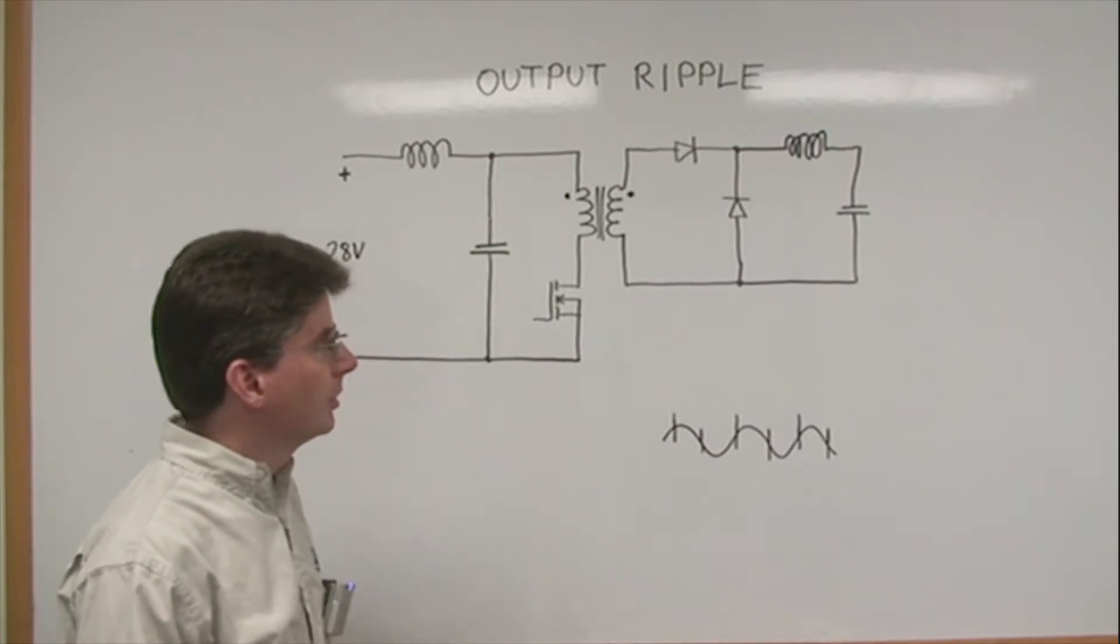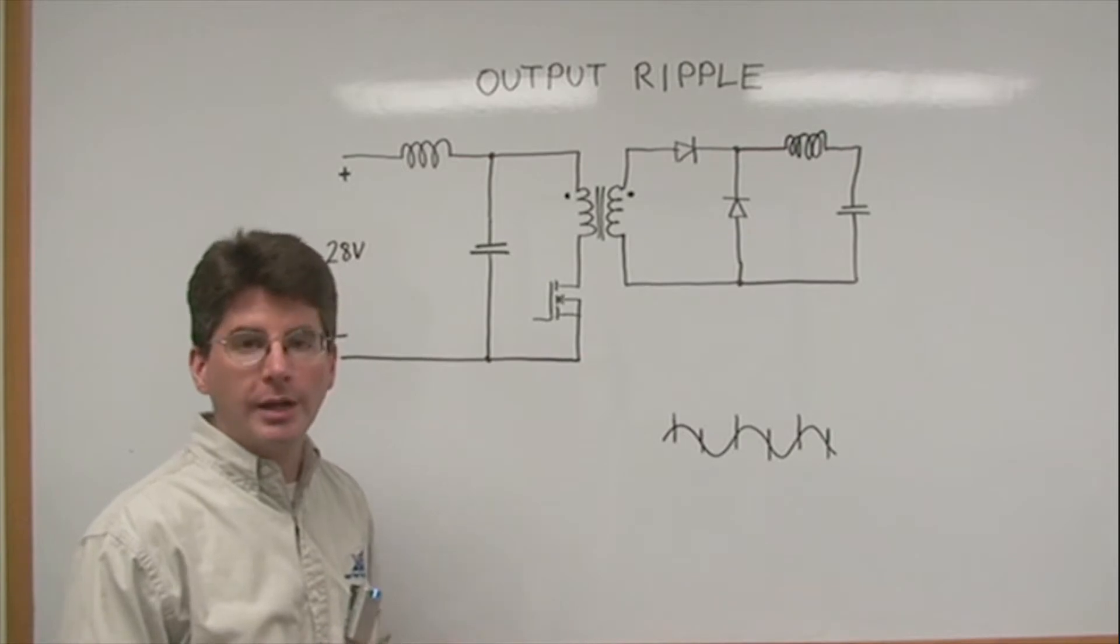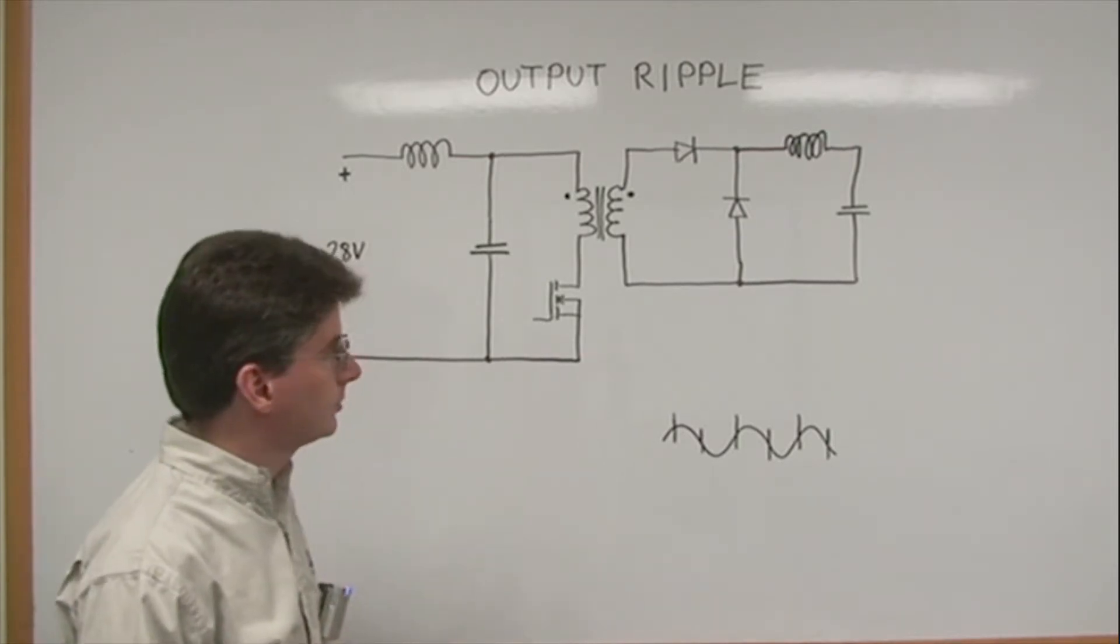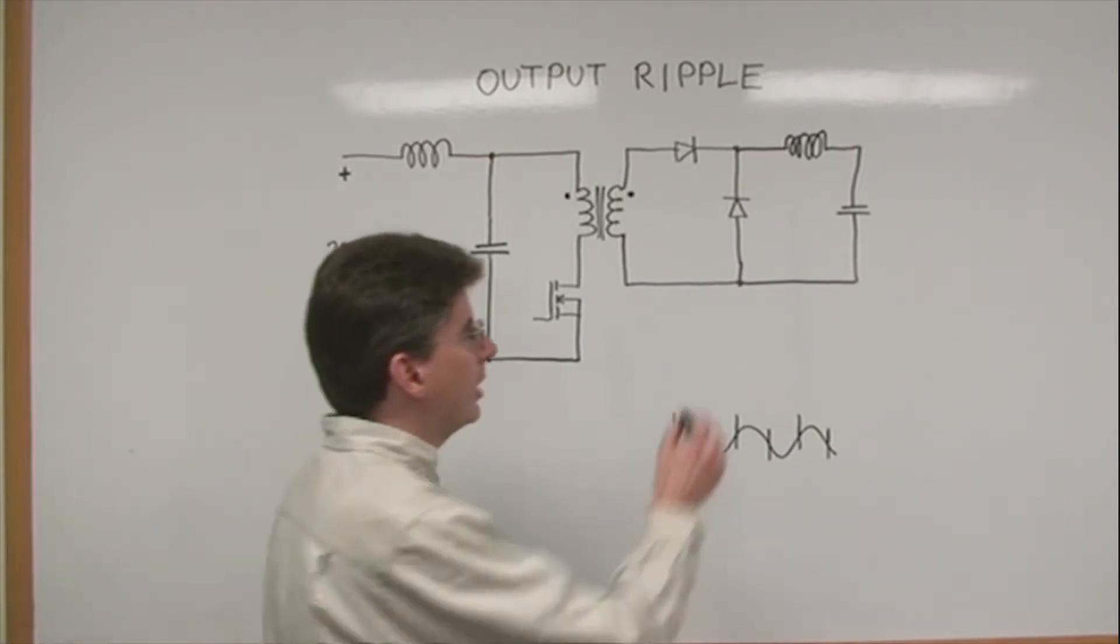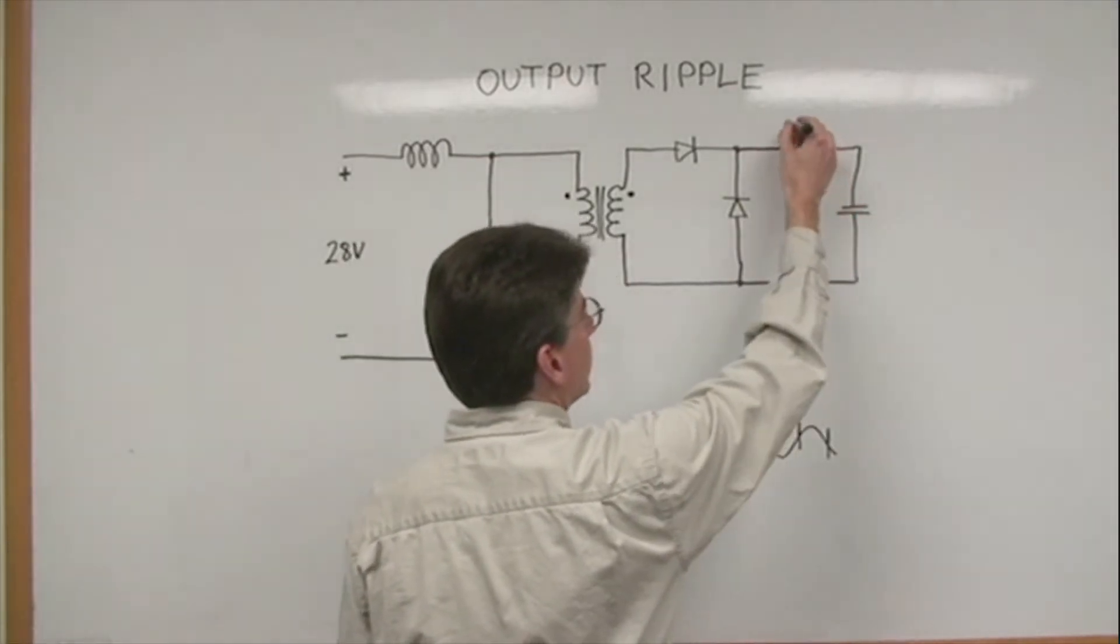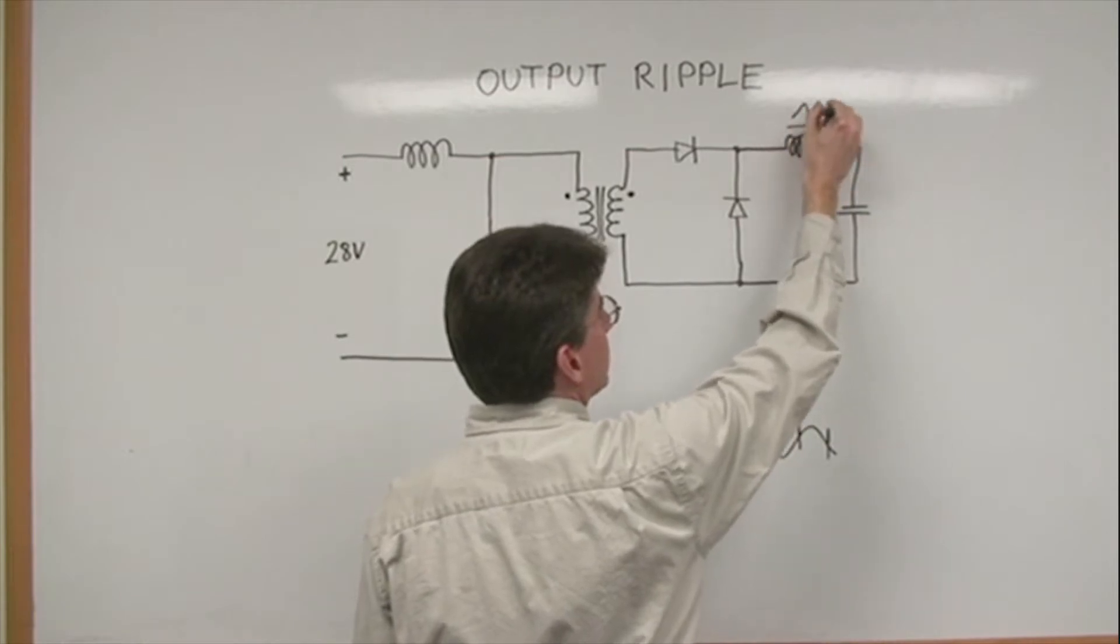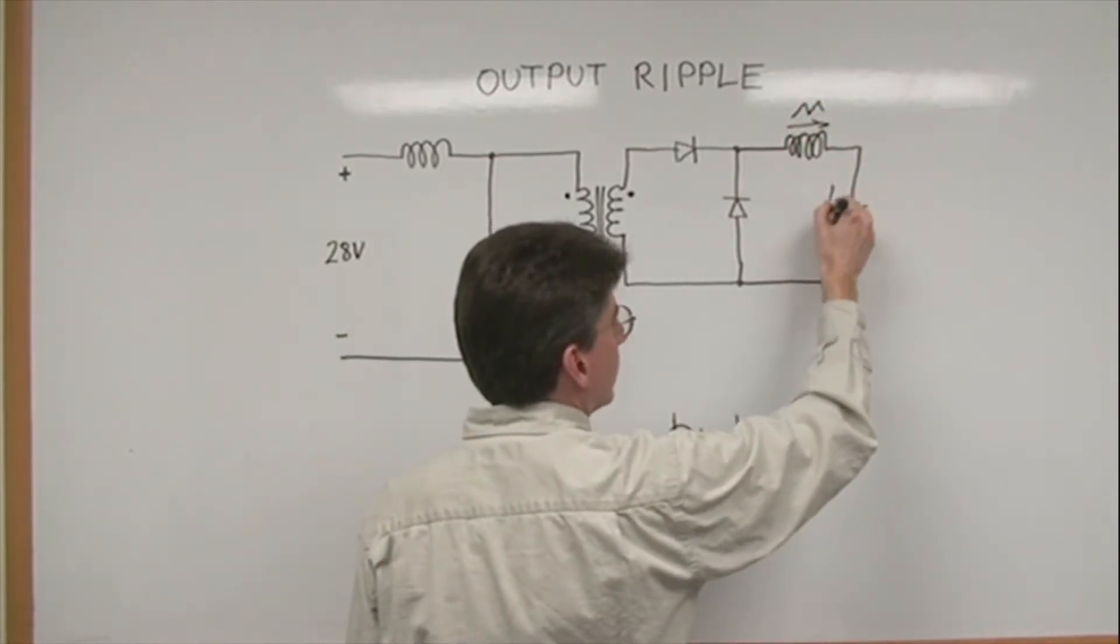We also use flyback in a lot of our converters. This topology will create output ripple in its output capacitor. The current in this inductor is a triangle wave current, and that current will flow in this capacitor and create a voltage ripple.